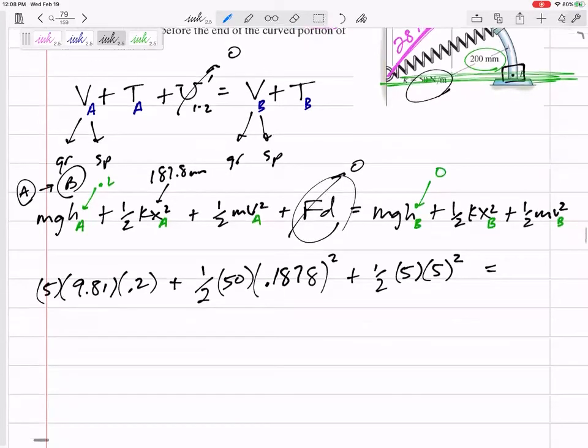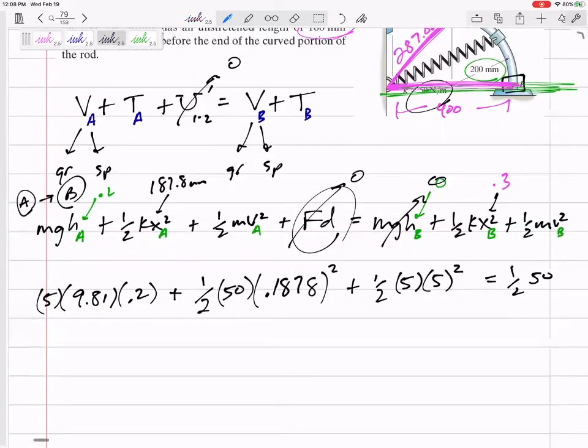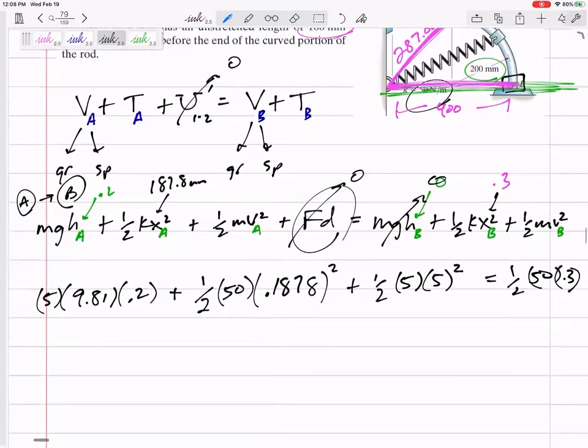Equals the final MGH. Well, it ends at zero. What would this X be? Well, this length would be 400, and its unstretched length is 100, so 0.3. 1⁄2 K times 0.3 squared right there plus 1⁄2 MV is what we're looking for. Not too bad.